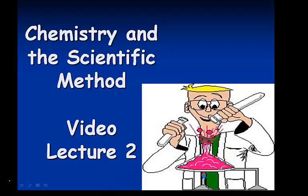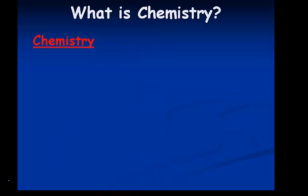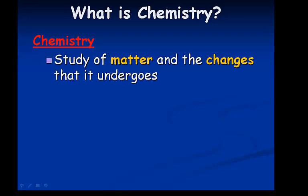Chemistry and the Scientific Method, Video Lecture 2. First of all, what is chemistry? What are we talking about when we talk about chemistry? Chemistry is the study of matter and the changes that it undergoes. So the stuff that things are made of and how we can change and alter that stuff.